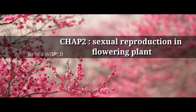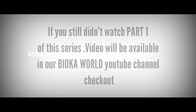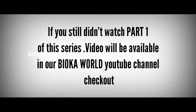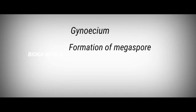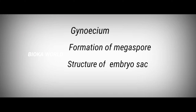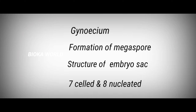Chapter 2: Sexual Reproduction in Flowering Plants. Good morning students. Today we are going to see about the Gynoecium and the formation of megaspores, i.e., the embryo sac, the structure of the embryo sac and how it is 7-celled and 8-nucleated. Let us see one by one.